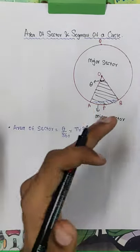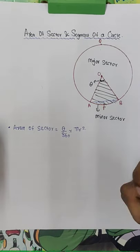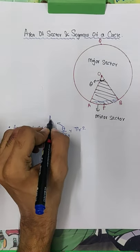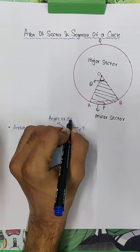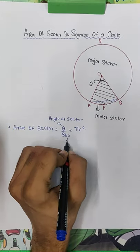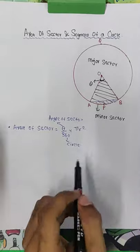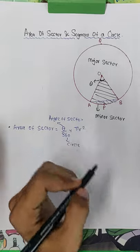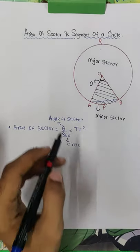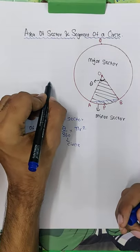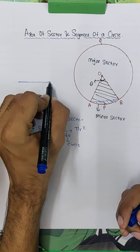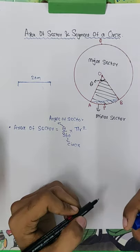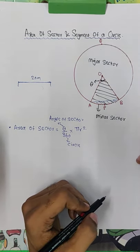No matter how many degrees the sector is, theta upon 360 upon pi r square, where theta is the angle of the sector. You know the circle is 360 degrees and the full circle is pi r square. So we find out that part as a percentage. For example, if I have a wire of length 20 meters and I ask what is one-fourth of it?